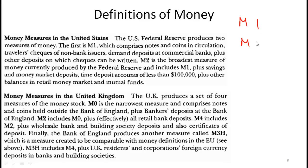Now let's get deeper into definitions of money. Most economics textbooks are written by Americans, and you might think the whole world uses M1 and M2 — but that's not true. The M1 and M2 definitions you've read are specific to the United States. Other countries have different definitions; in the UK, M2 might mean something different from M2 in the US, and in Pakistan it may mean something else entirely.